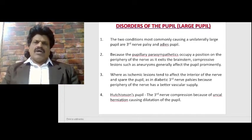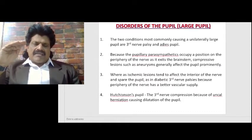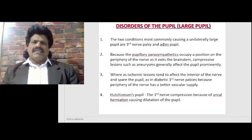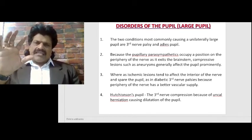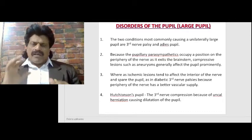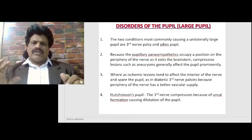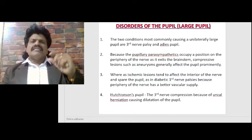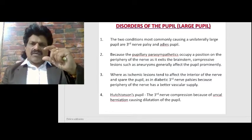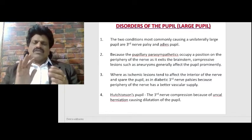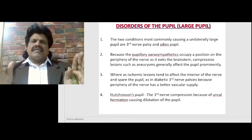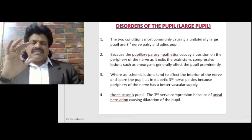We all know that the size of the pupil is determined by two pathways. One, the parasympathetic fibers which run on the third nerve, which cause constriction of the pupil. Second, the sympathetic pathways which cause dilatation of the pupil. It is a delicate balance between the sympathetic and parasympathetic which controls and determines the size of the pupil.